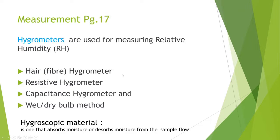There are several types of hygrometers: the hair hygrometer, which is very primitive; resistive and capacitive, which are both electrical property-based; and the wet-dry bulb method. The first three rely on hygroscopic materials — materials with an affinity for moisture that absorb or desorb moisture from the sample flow. The wet-dry bulb method is quite different.